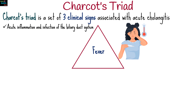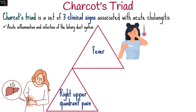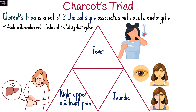The triad includes fever, often high and may be accompanied by chills; right upper quadrant pain, which is pain in the upper right side of the abdomen where the liver is located; and jaundice, a yellowing of the skin and eyes due to elevated bilirubin levels in the blood.